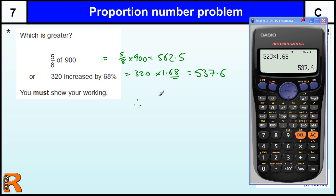Therefore, five-eighths of 900 is greater.